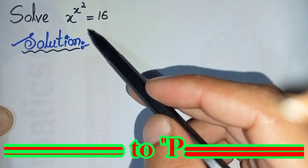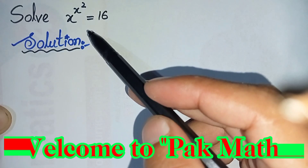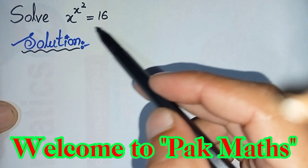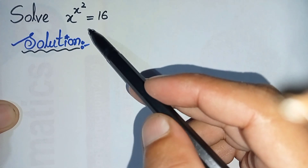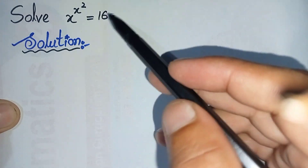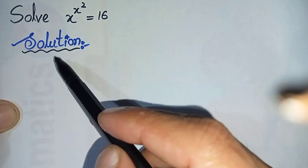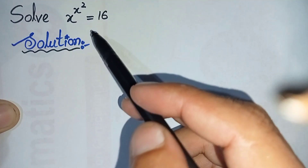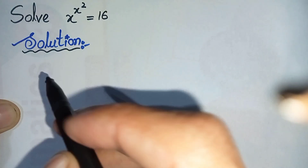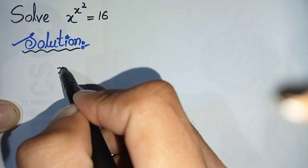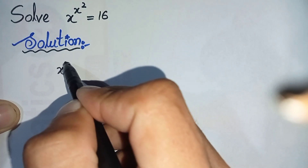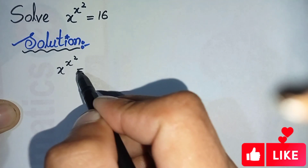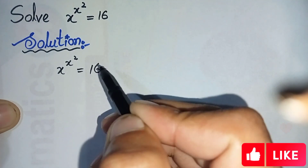Hello everyone, welcome to Parkmas. In this video I'm going to solve this exponential math problem. We will write the solution and rewrite the question. The question is: x raised to the power x² is equal to 16.